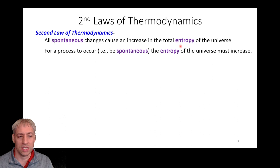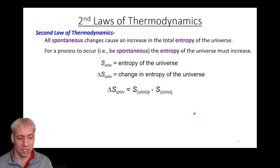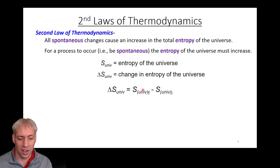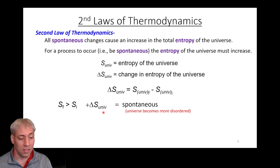The second law, in the context of chemistry: all spontaneous change causes an increase in the total entropy of the universe. If a process occurs, it occurs because the total entropy of the universe has increased. We can define this numerically as S universe — the entropy of the universe — and delta S universe, which is the change in entropy of the universe. Delta S is final minus initial. If the entropy of the final condition is greater than the initial, we have a positive delta S universe, meaning the universe becomes more disordered. This is a favorable or spontaneous process.